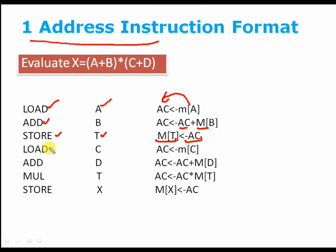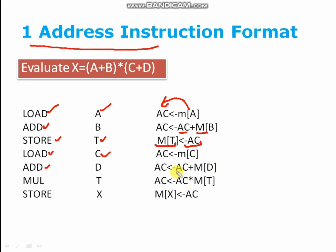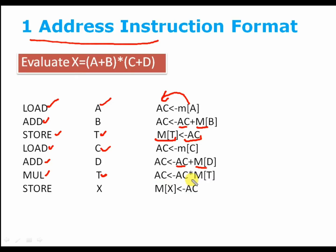Now we will load C into the accumulator and then perform an addition operation. The accumulator is added to memory of D and the result is stored in the accumulator. Now we just have to multiply — the accumulator is multiplied with memory of T and the result is stored in the accumulator. Then a store operation is performed to store the value of the accumulator into memory of X.